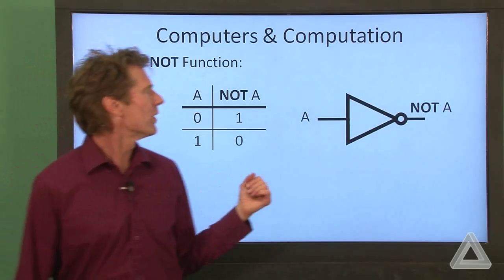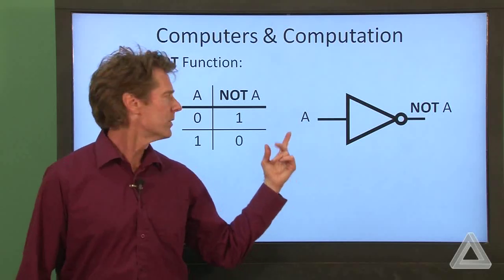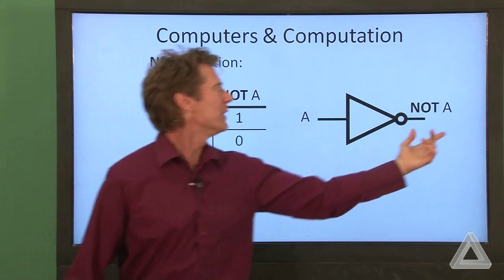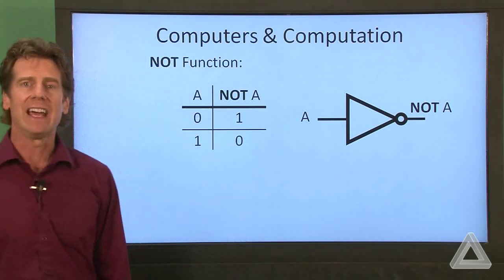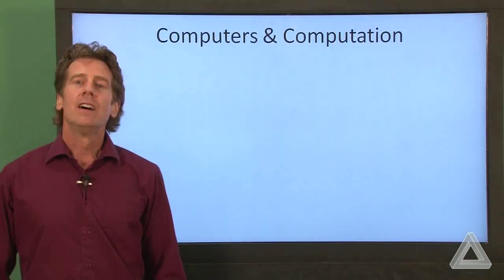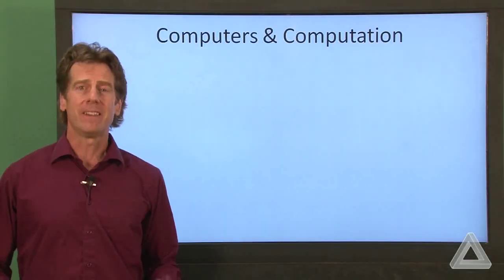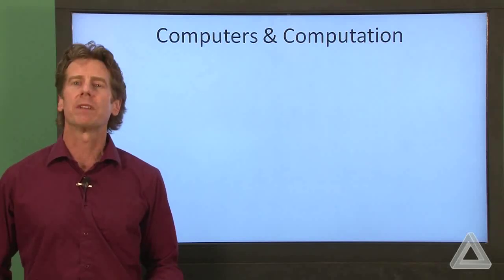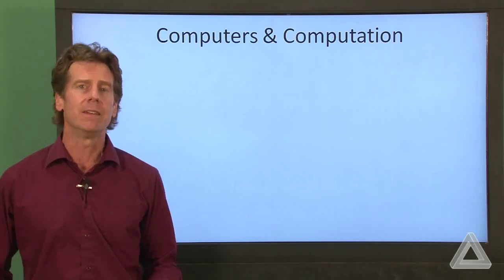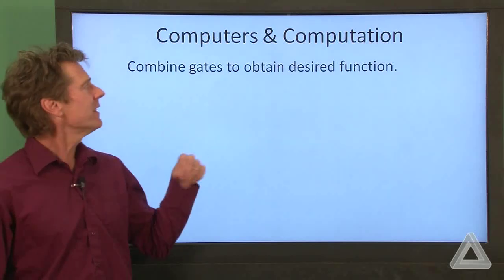The symbol for the NOT function is this triangle. So we feed in the bit A, and we get out NOT A. Now we can combine these very simple functions to obtain much more complicated behavior, more complicated functions. So we combine those gates.